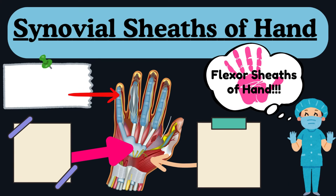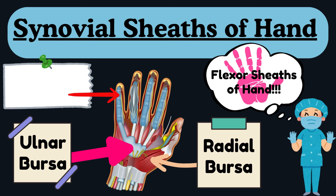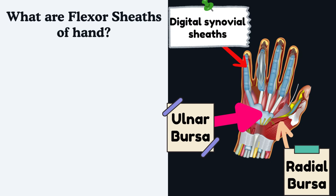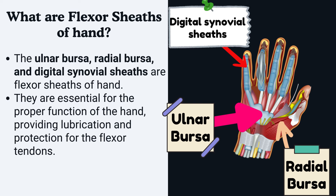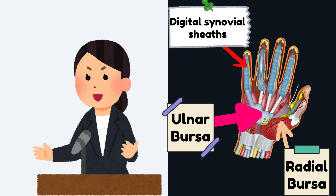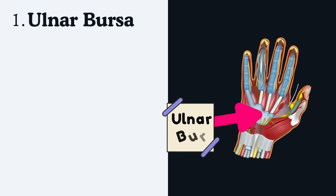In this video we will talk about the synovial sheaths of flexors of hand and look at the anatomy of the ulnar bursa, radial bursa, and digital synovial sheaths. The ulnar bursa, radial bursa, and digital synovial sheaths are flexor sheaths of hand. They are essential for the proper function of the hand, providing lubrication and protection for the flexor tendons.